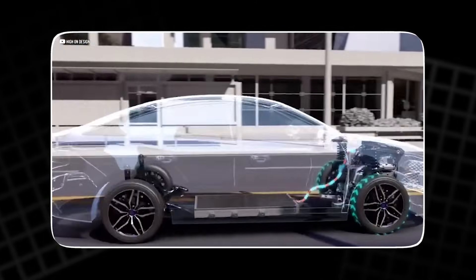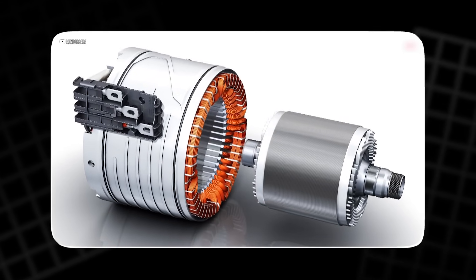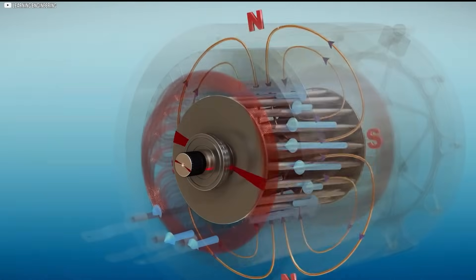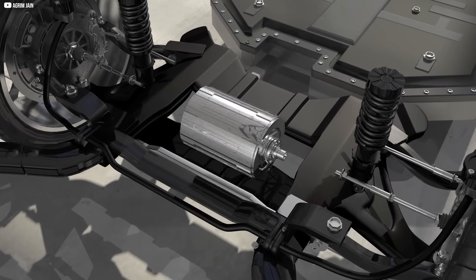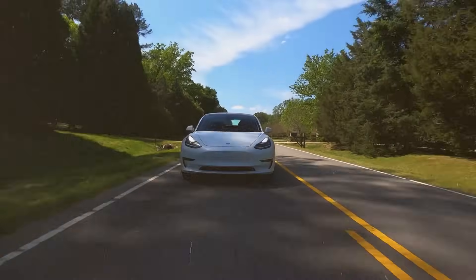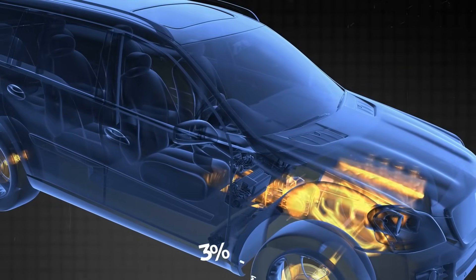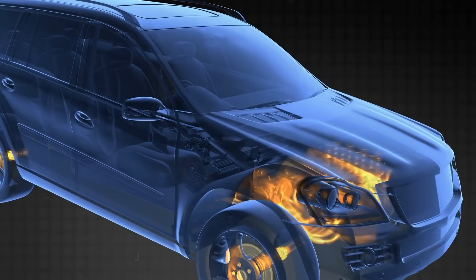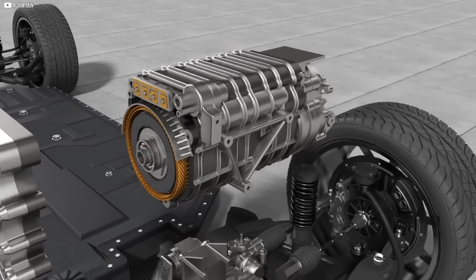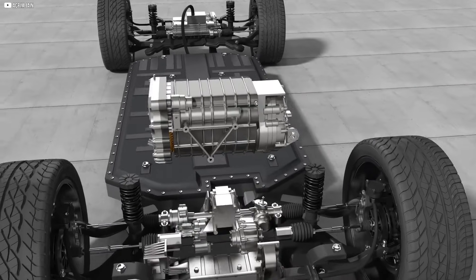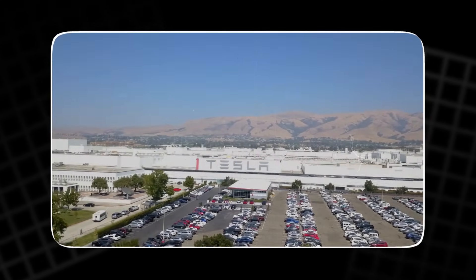Induction motors offered decent performance, especially at higher speeds. They had no permanent magnets inside, which made them cheaper and less dependent on rare earth materials. But there was a trade-off. To make the rotor spin, the motor had to create currents inside it. That meant extra energy loss right from the start. Long highway drives showed this weakness clearly. Efficiency dropped. 3-4% of energy was wasted just heating up the rotor. And when it came to launch torque, the force needed to get the car moving quickly from a standstill, these motors struggled to deliver the explosive power EV drivers crave. For a company obsessed with pushing boundaries, this wasn't good enough.